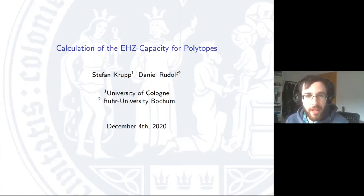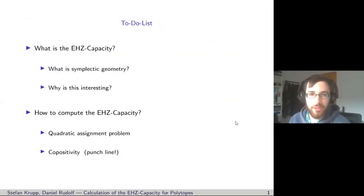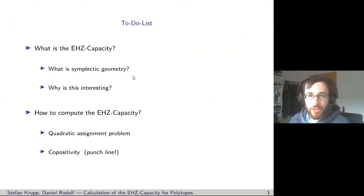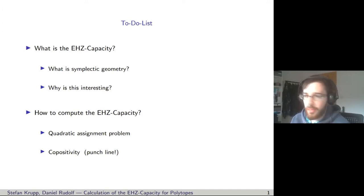I would like to talk about the calculation of something called the EHZ capacity of polytropes. Everything I'm talking about today is joint work with Daniel Ruder from RUH University in Bochum. The to-do list for my talk: I will explain what the EHZ capacity is, give a brief introduction to symplectic geometry with motivation, discuss the quadratic assignment problem and how it relates to our problem setting, and cover co-positivity and completely positive optimization — that's the punchline.